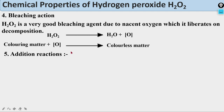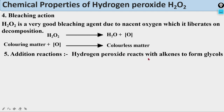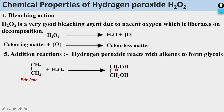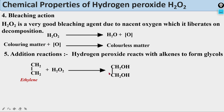Addition reactions: hydrogen peroxide reacts with alkenes to form glycols. For example, ethene (CH₂=CH₂) reacts with H₂O₂ to give ethylene glycol (CH₂OH–CH₂OH). So this is the addition reaction of hydrogen peroxide, where ethylene reacts with H₂O₂ to form ethylene glycol.